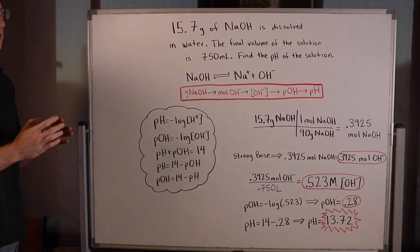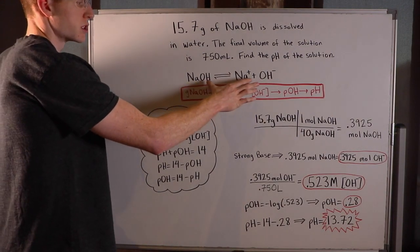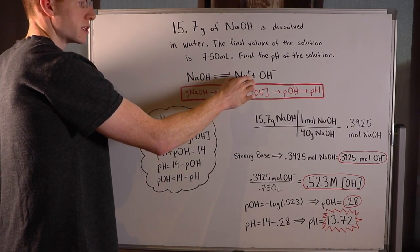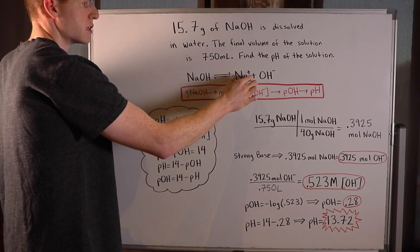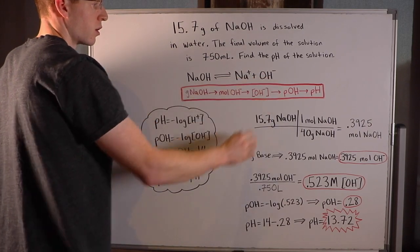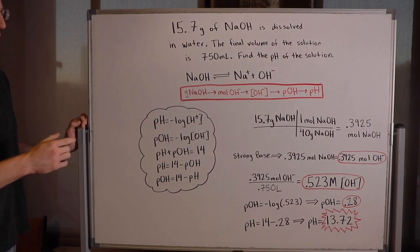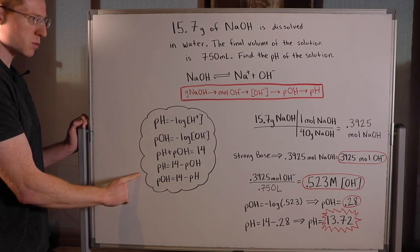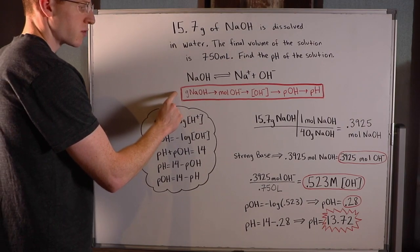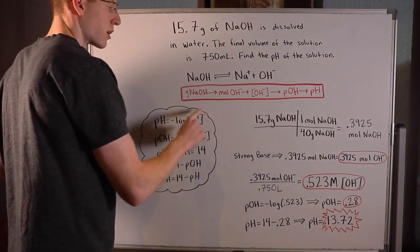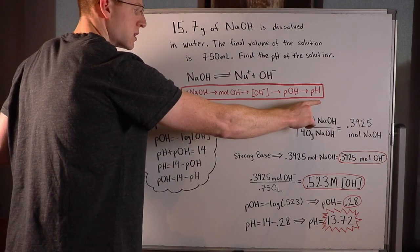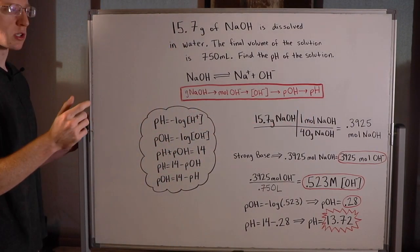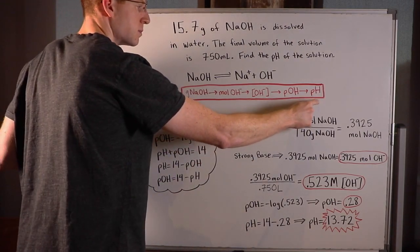For almost every problem like this, you want to start out by writing your dissociation of your compound. So in this case, it's NaOH, and this is a strong base, so it's going to completely dissociate into Na plus ions and hydroxide, or OH minus ions. Ultimately, we want to get to pH, and we're starting with grams of NaOH. So how are we going to get from grams of NaOH to pH?